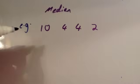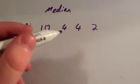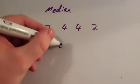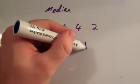In our last example, we've been asked to find the median for 10, 4, 4, and 2. Again, let's arrange them in numerical order. The smallest is 2, then 4, then 4, and then 10.